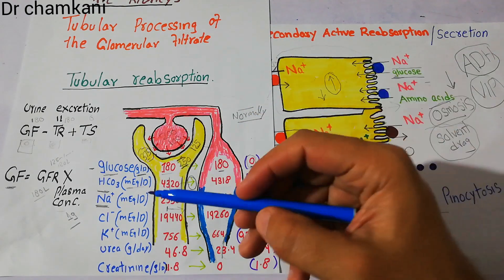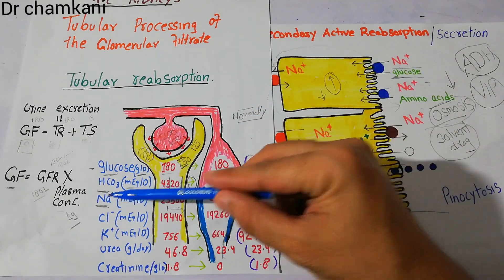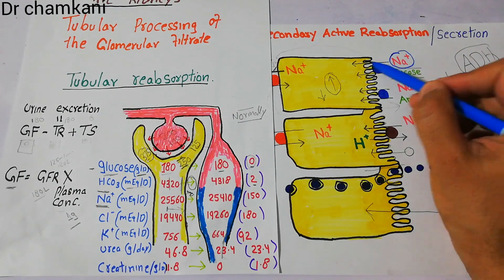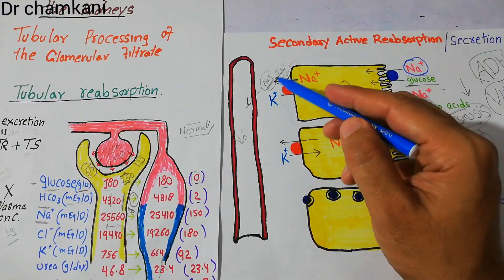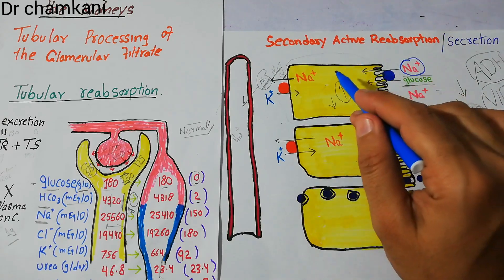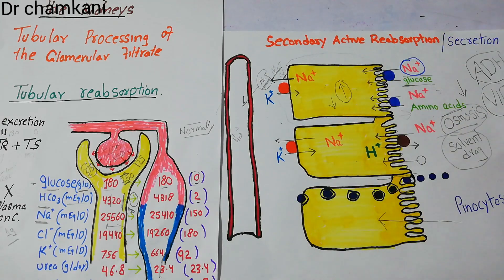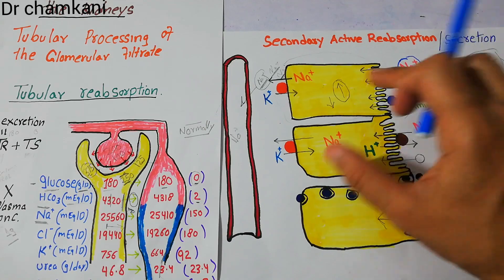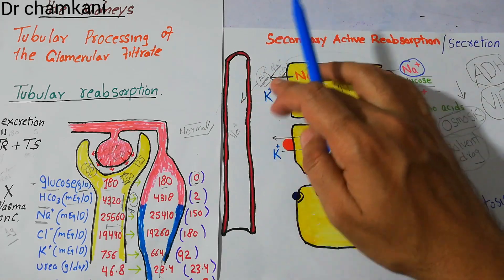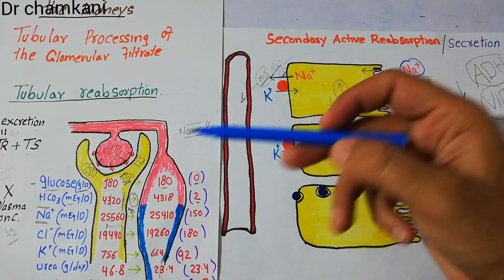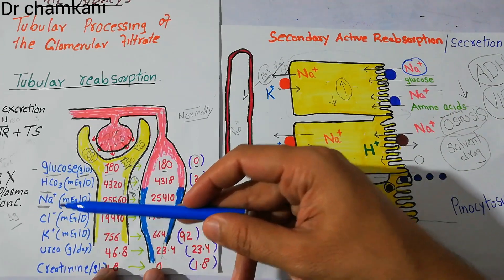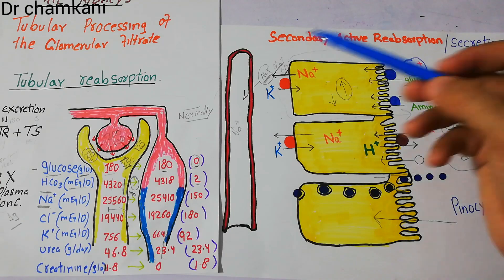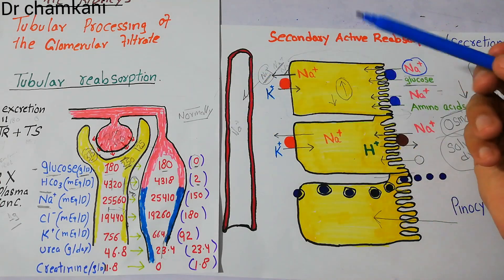First, when sodium from the proximal tubule is actively absorbed with the help of the sodium-potassium pump, sodium gets entry into the cell. We discussed previously that this also helps glucose and amino acids get entry into the cell and into the peritubular capillaries and intercellular spaces. But sodium also helps chloride — it helps chloride get entry from the proximal tubule into the peritubular capillaries or interstitial spaces.